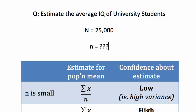Here's my example about estimating the average IQ of university students. Let's say there's 25,000 university students on campus, and we're trying to estimate the average IQ of those students by taking a sample from that 25,000. Obviously, we're not going to sample the whole thing, so we've got a small sample to make an estimate of that population mean IQ.